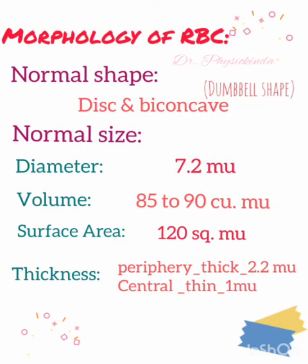Moving on to the morphology of red blood cells: the normal shape is disc-shaped and biconcave, which looks somewhat like a dumbbell shape — thicker at the peripheral ends and thinner at the center. Normal diameter is 7.2 micrometers, volume is about 85 to 90 cubic micrometers, surface area is 120 square micrometers, and peripheral thickness is 2.2 micrometers while central thickness is 1 micrometer.